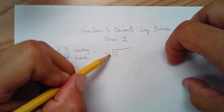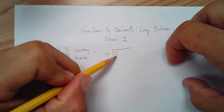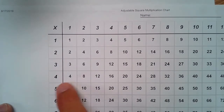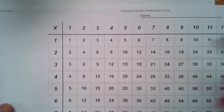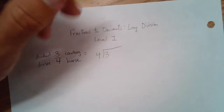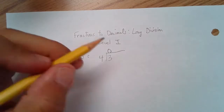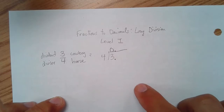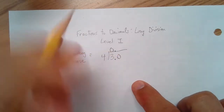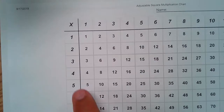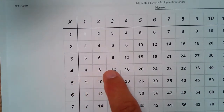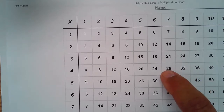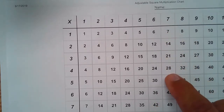When I divide this, I have to think: how many times does four go into three? Looking at the multiplication chart, three is too small, so that's going to be a zero. Now I add a decimal because I'm turning this fraction into a decimal, and I add a zero. How many times does four go into thirty? I want to get as close to thirty without going over — seven times, which gets me to twenty-eight.